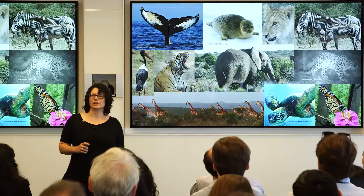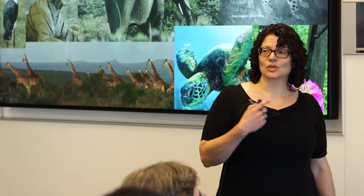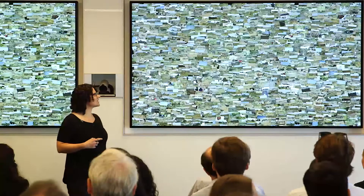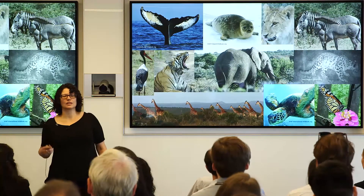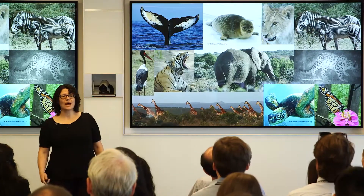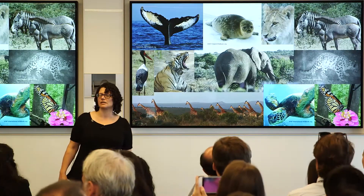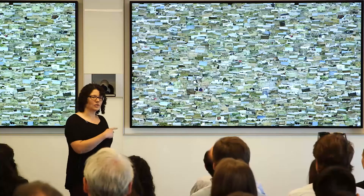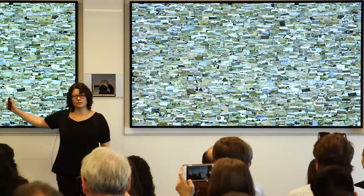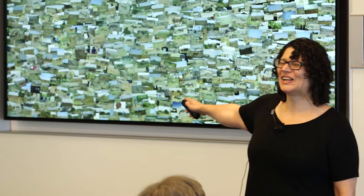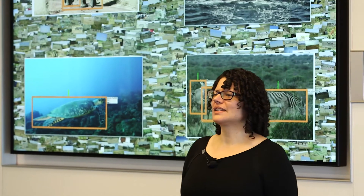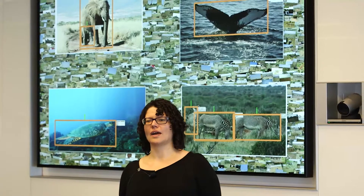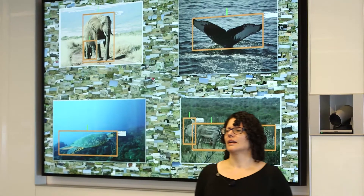Today, images are the most abundant, readily available source of information about animals — and everything else, for that matter. These images come from all kinds of sources: social media like Instagram, Facebook, and YouTube, as well as camera traps, field assistants, drones, scientists, and tourists visiting nature conservancies and going whale watching. We've created algorithms that can take hundreds of thousands of images and pull out all the pictures of a given species — elephants, whales, turtles, giraffes, and zebras — and localize where the animals are in those pictures using deep learning.